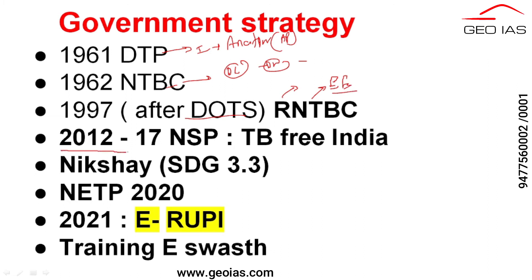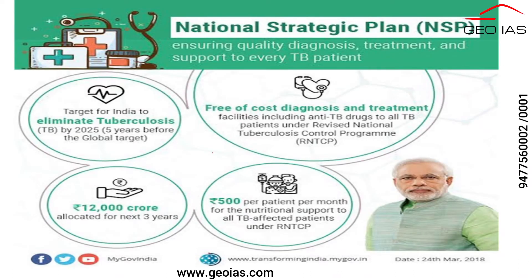In the year 2012, they launched a dedicated scheme and started to fix targets also. They fixed the TB Free India goal. Under this national strategic plan to reduce TB, they wanted to ensure quality diagnosis, treatment, and support for TB patients - free-cost medicines being one component. Apart from that, they decided to eliminate TB by 2025 itself.